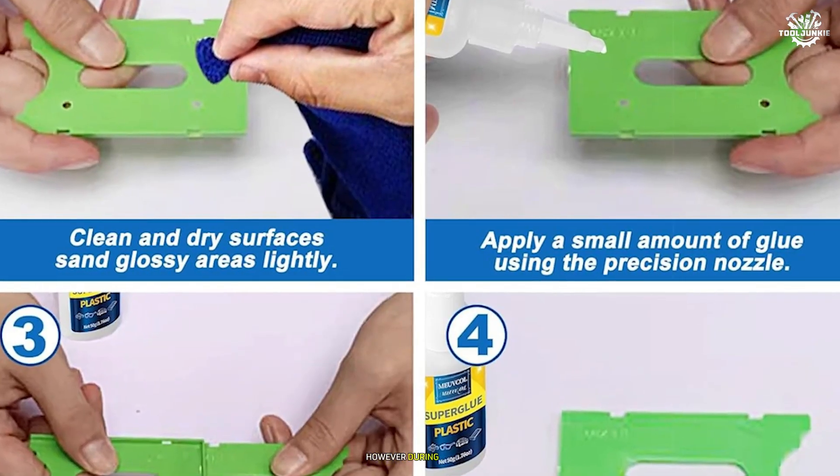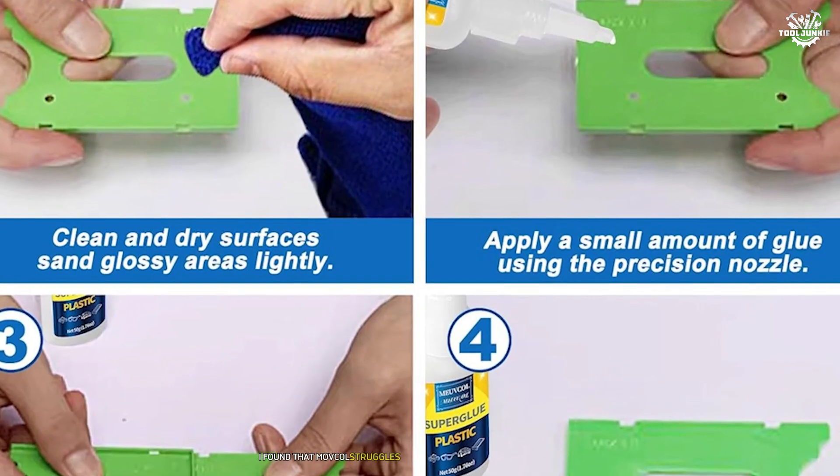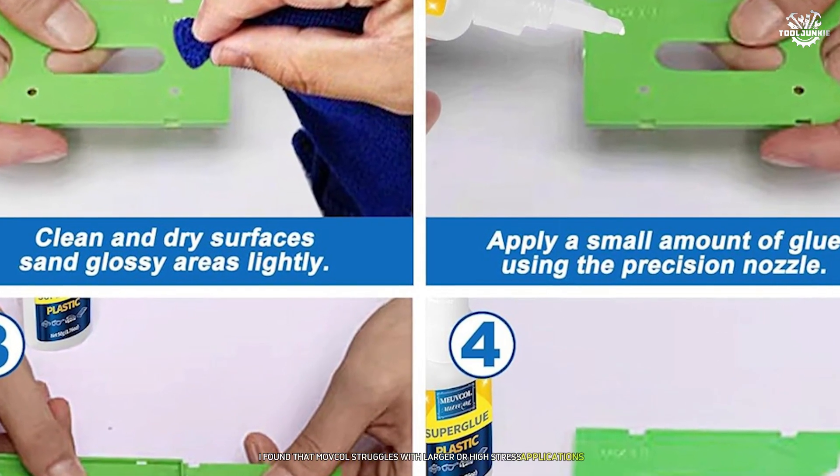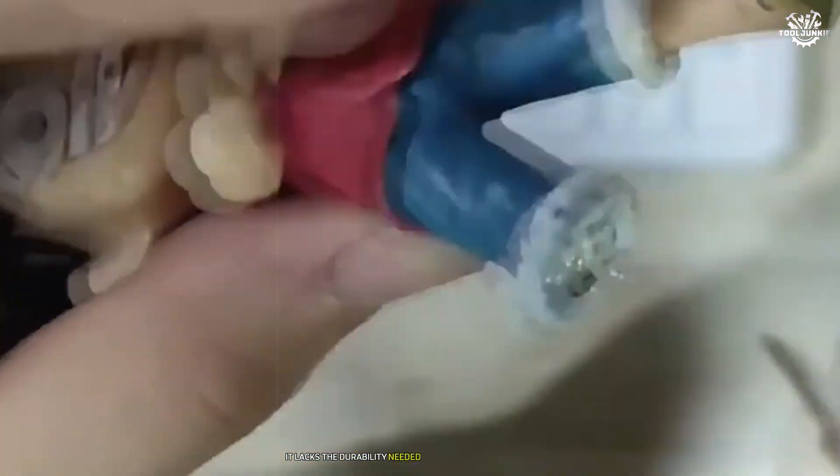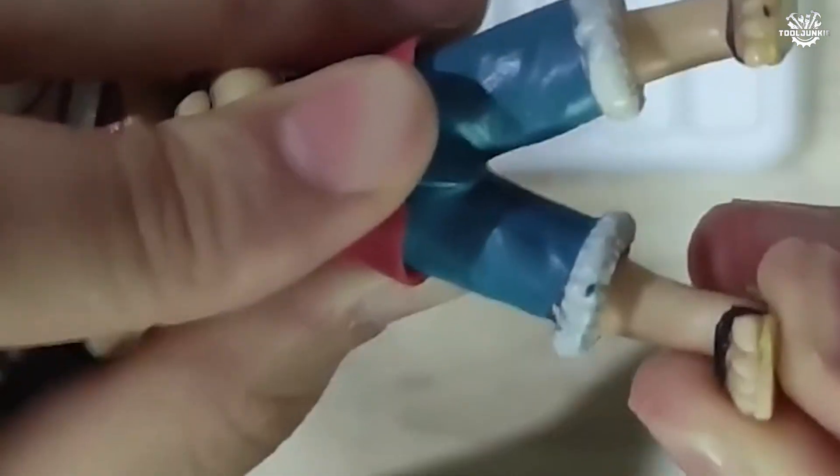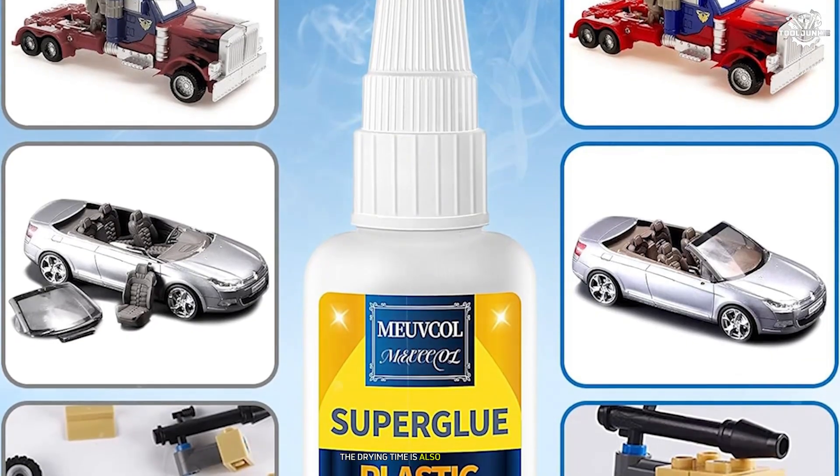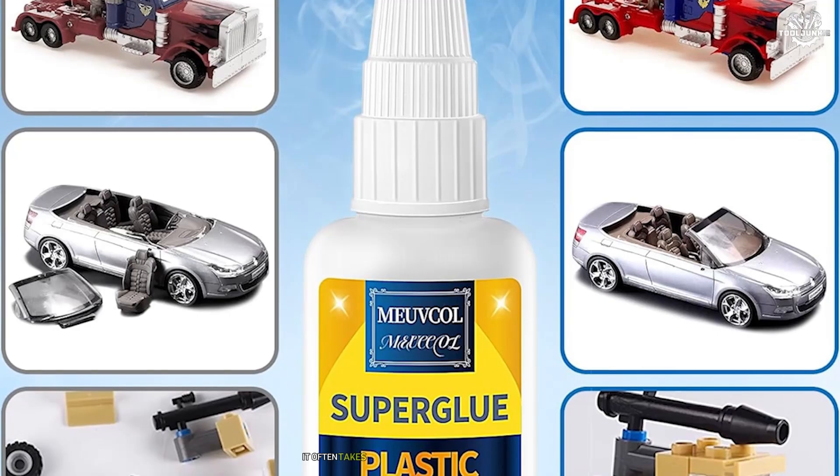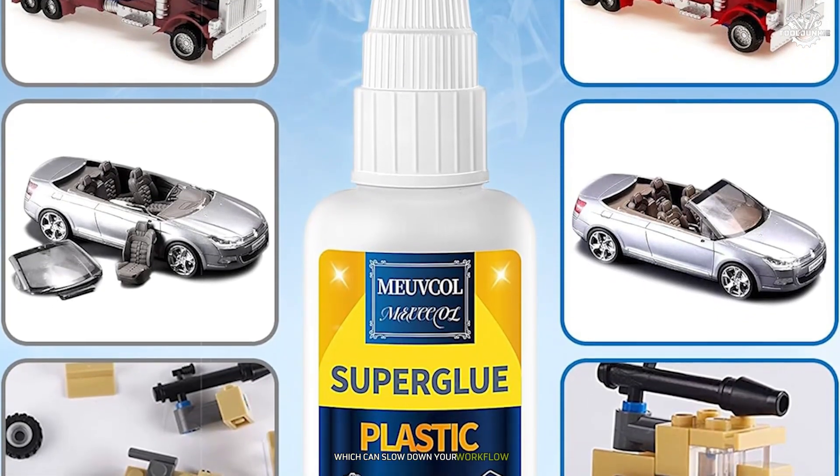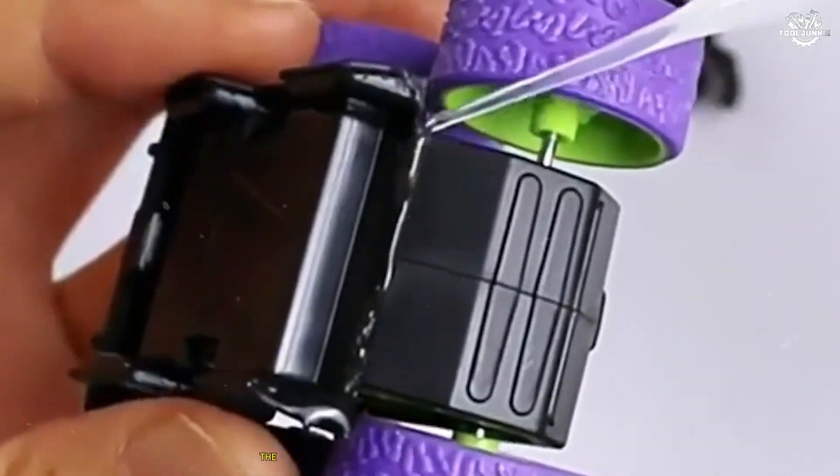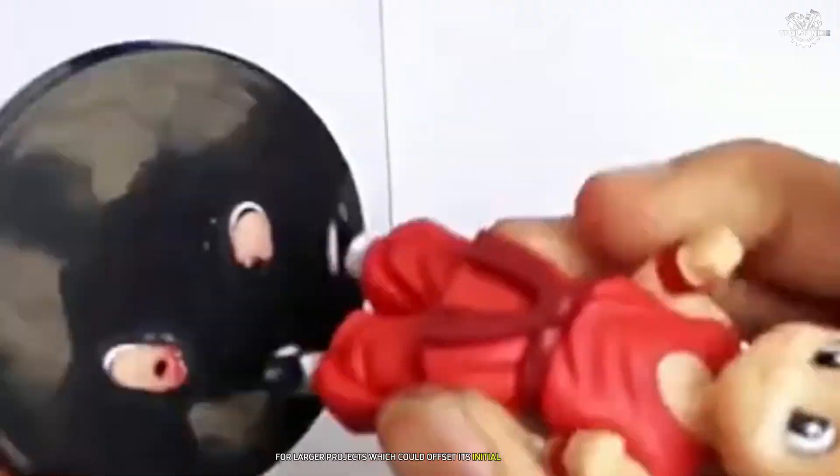However, during testing, I found that MoveCall struggles with larger or high-stress applications. While it provides an adequate bond for lightweight PLA parts, it lacks the durability needed for more demanding projects. The drying time is also inconsistent. It often takes longer than advertised to fully cure, which can slow down your workflow. Additionally, the small bottle size means you might need to purchase multiple units for larger projects, which could offset its initial affordability.